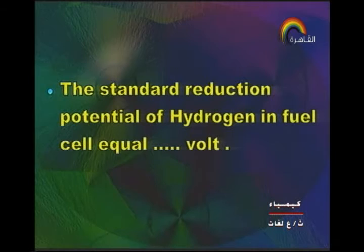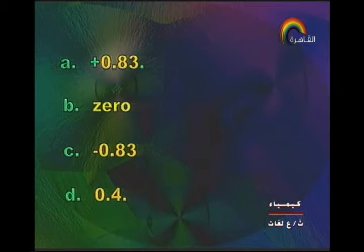Next point: the standard reduction potential of hydrogen in a fuel cell equals what volt — 0.83, 0, −0.83, or 0.4? The answer is −0.83 for the reduction potential of hydrogen.